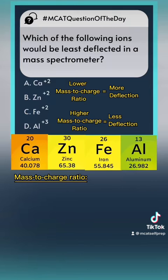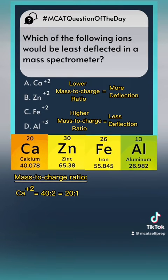Starting with calcium: it has a charge of 2, so we'll round its mass to 40, giving a mass-to-charge ratio of 40 to 2, which simplifies to 20 to 1. Next, zinc's charge is 2, so we round its mass to 66, giving a mass-to-charge ratio of 66 to 2, or 33 to 1.